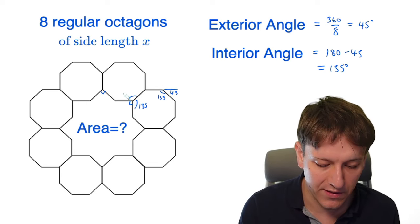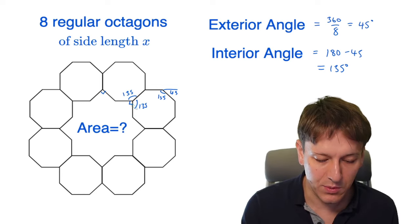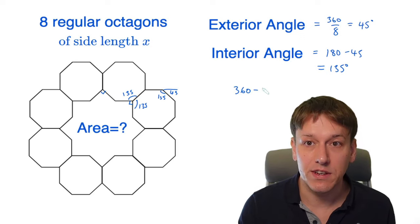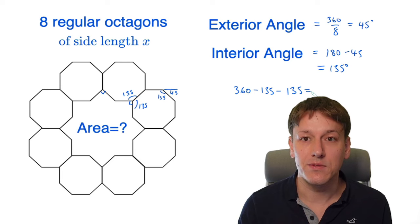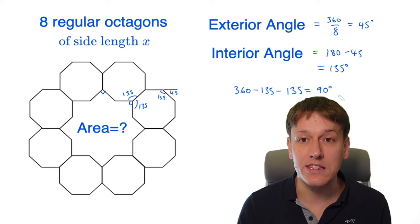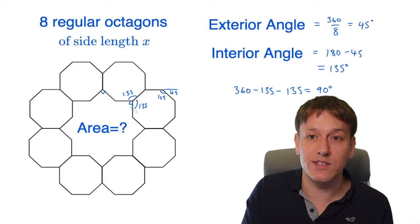So in particular, these ones are 135 each, and then this one is a right angle, because if I do 360 minus 135 minus 135, that gives me 360 minus 270, which is 90 degrees. So we really do have right angles here.